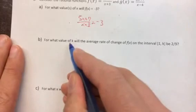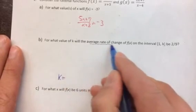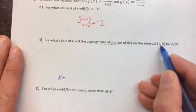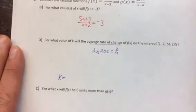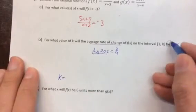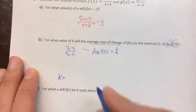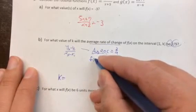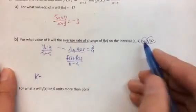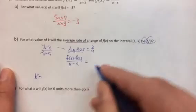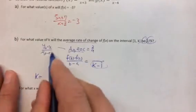This next one is much harder. For what value of k will the average rate of change of f of x on the interval from 1 to k be 2 ninths? We need a formula: the average rate of change is f of b minus f of a, over b minus a. On the interval from 1 to k, our second x value is k and our original is 1, so the denominator is k minus 1 — the change in x. For example, if k is 5, x increased by 4.